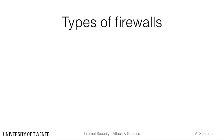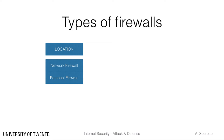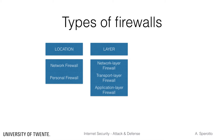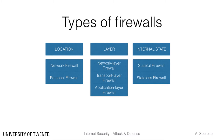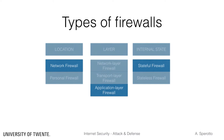One can choose among different types of firewalls. The main aspects one needs to consider are the location of the firewall, the inspected protocol layer, and whether the firewall will keep internal state. These aspects are clearly orthogonal. For example, you could have a network-based, application layer, stateful firewall. This combination, we will see, is known as an application proxy.